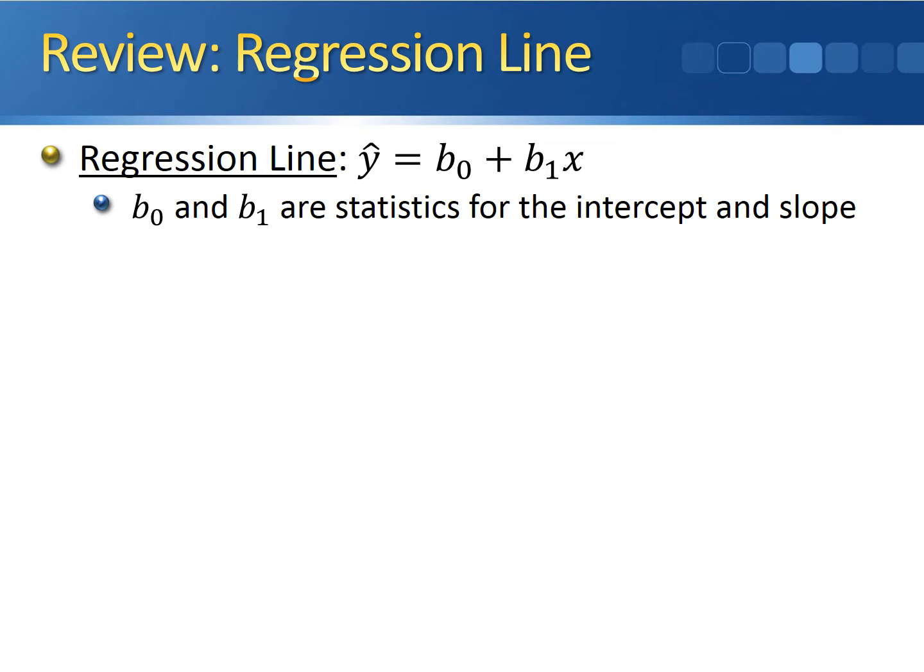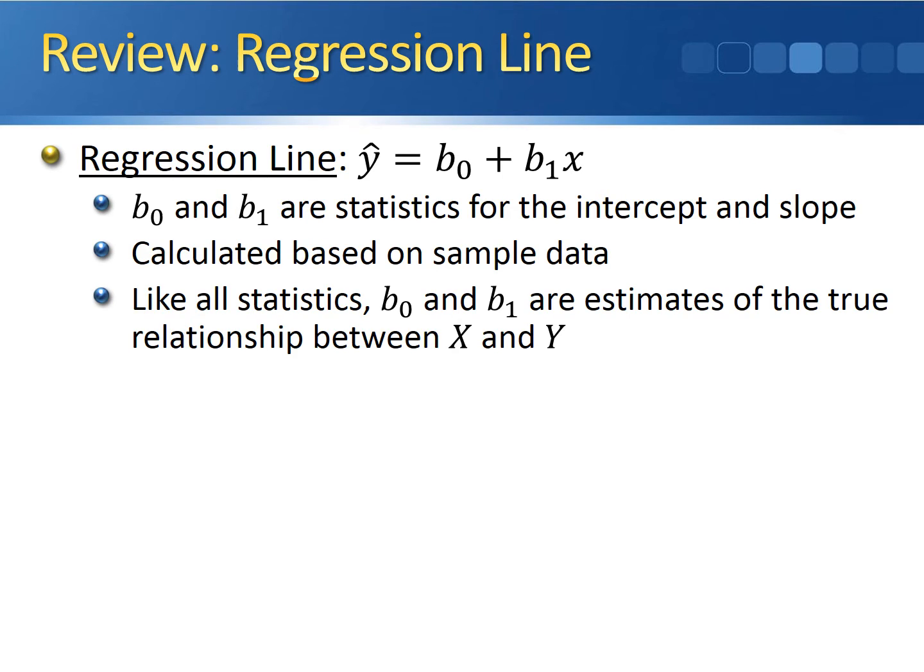b-naught and b-1 are the statistics for the intercept and slope. These are calculated based on the sample data that we have. However, like all statistics, b-naught and b-1 are estimates of the true relationship between x and y.